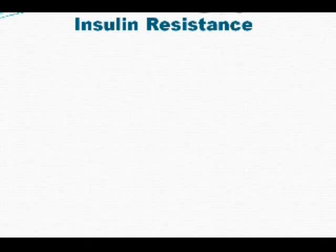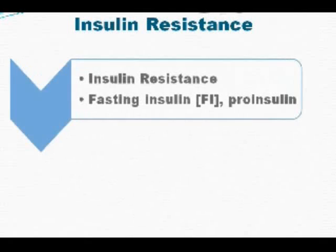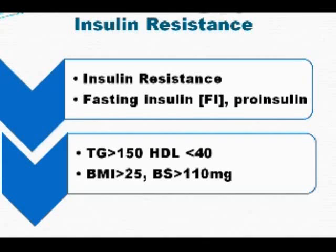Let's really define insulin resistance. According to the National Cholesterol Education Program, insulin resistance is when you have a triglyceride level greater than 150 and an HDL or healthy cholesterol less than 40. Combined with a BMI greater than 25 — indicating obesity — and a blood glucose level greater than 110. If you have obesity in the presence of high glucose, low good cholesterol, and high triglycerides, these are the criteria used to diagnose insulin resistance.